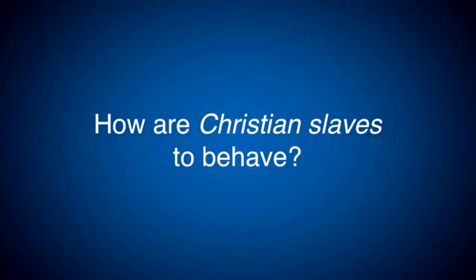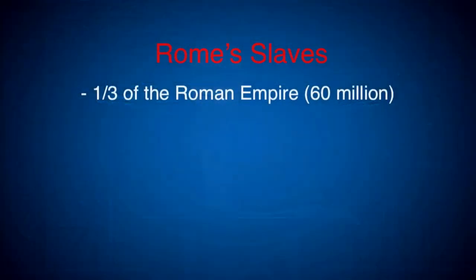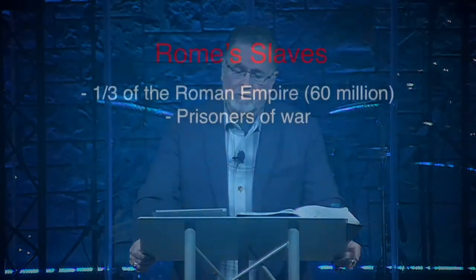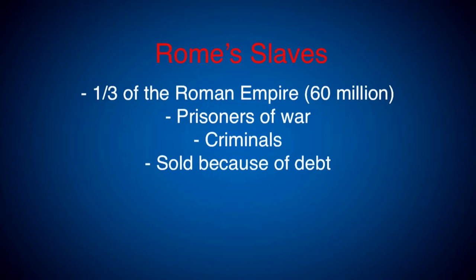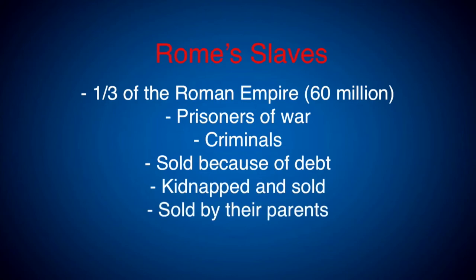In order to understand its context, we need to know something about the Roman Empire. The Roman Empire was built on the back of its slaves. It's been estimated that around one-third of the inhabitants of the Roman Empire were slaves — something like 60 million slaves. Some had become slaves because they were prisoners of war; some were criminals sentenced to slavery; some became slaves through debt; some were kidnapped and sold; some were sold by their own parents; and finally, some were born slaves by parents who themselves were slaves.